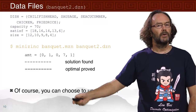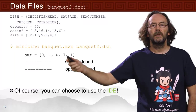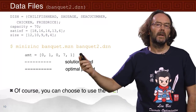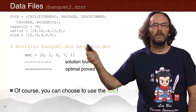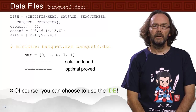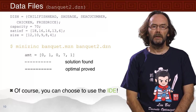And of course you can do the same in the IDE. We can just load up banquet.mzn, select one of the two data files loaded into the IDE, and run it by simply hitting the run button.